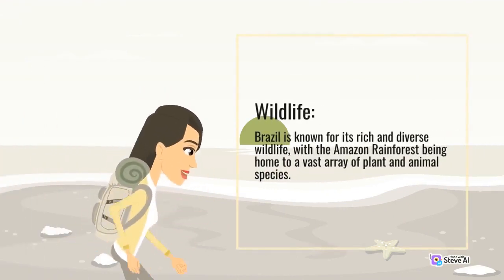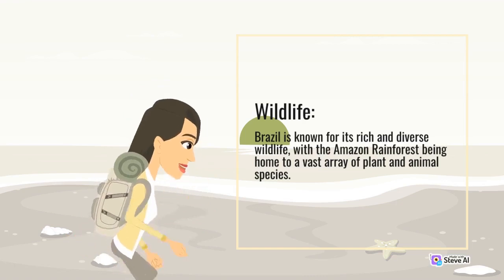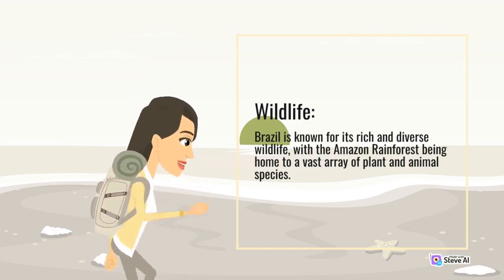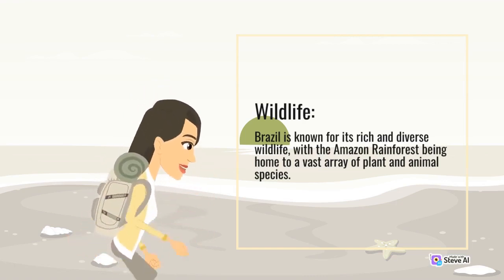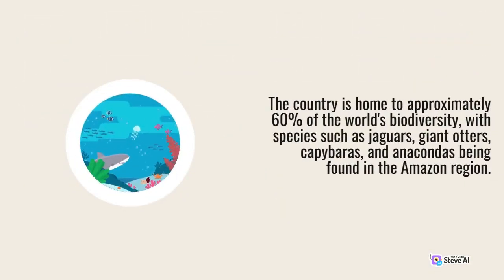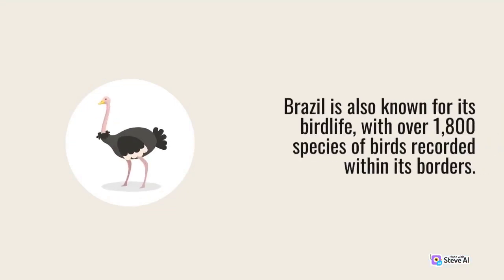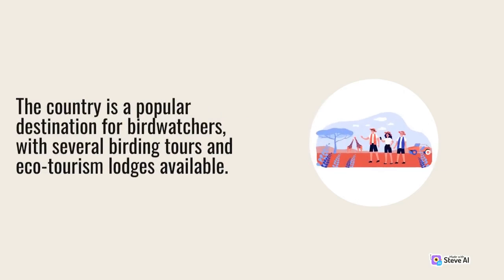Brazil is known for its rich and diverse wildlife, with the Amazon rainforest being home to a vast array of plant and animal species. The country is home to approximately 60% of the world's biodiversity, with species such as jaguars, giant otters, capybaras, and anacondas found in the Amazon region. Brazil is also known for its bird life, with over 1,800 species of birds recorded within its borders, making it a popular destination for birdwatchers.